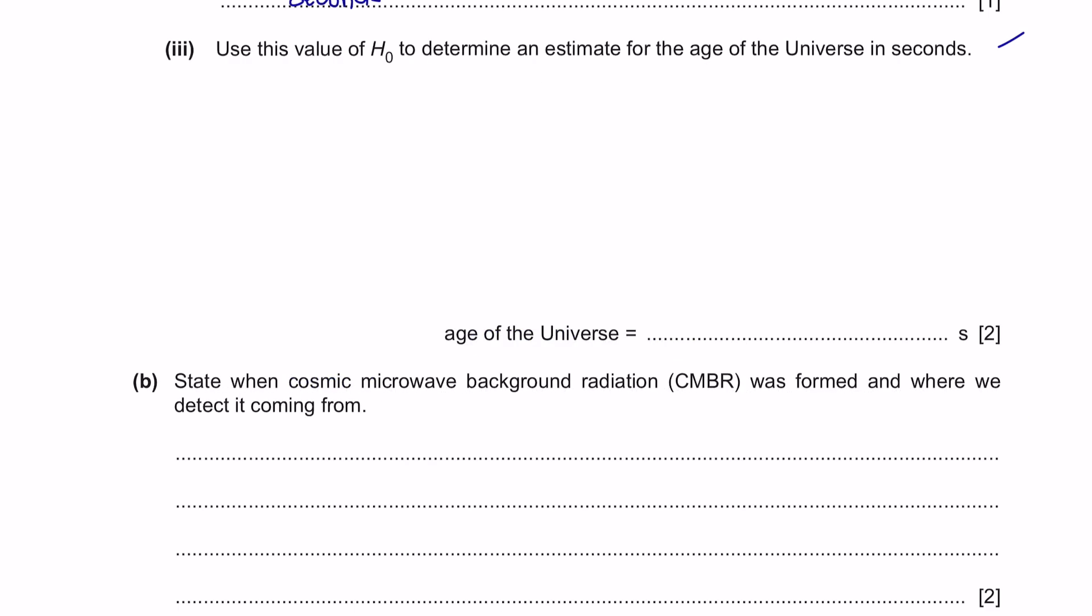Part 3. Use the value of H0 to determine an estimate for the age of the universe in seconds. To estimate the age of the universe, we can find it by the inverse of H0. Just substitute the value. This will be your final answer.